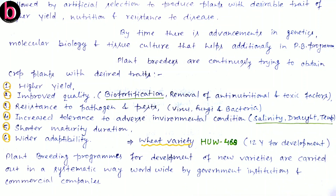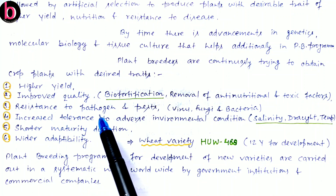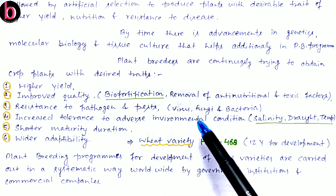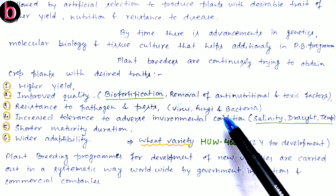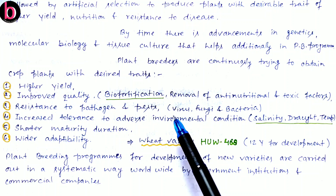There must also be removal of anti-nutritional or toxic factors — for example, phytic acid, tannins, lectins, protease inhibitors, and amylase inhibitors — such substances that are not beneficial for us. These kinds of substances must also be removed during quality improvement. Third is resistance to pathogens and pests. There may be a number of pests like viruses, fungi, and bacteria that we have to protect against. We have to produce crops which have high resistance against these pathogens and pests.